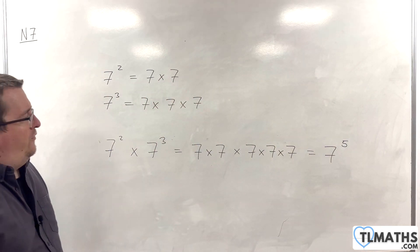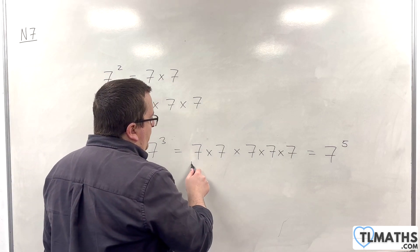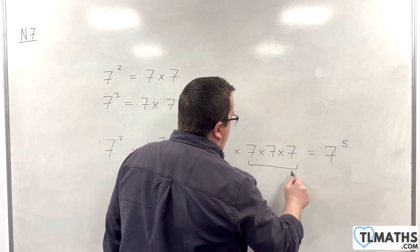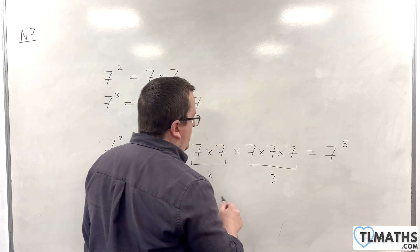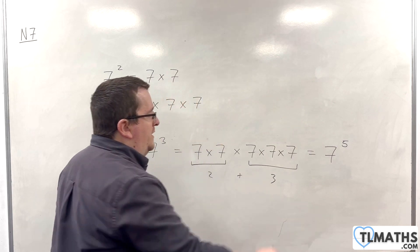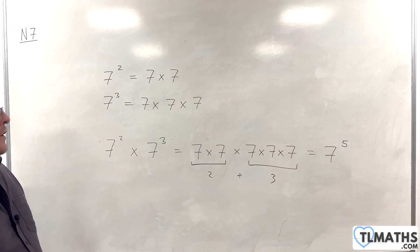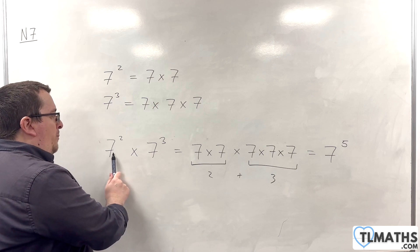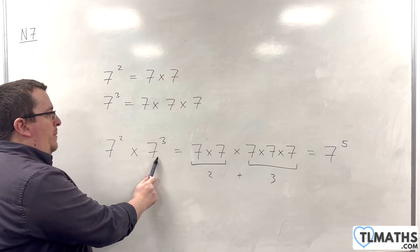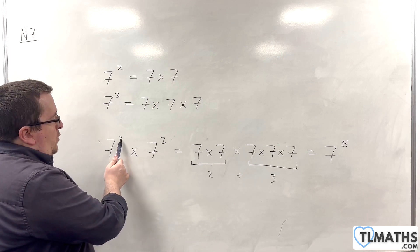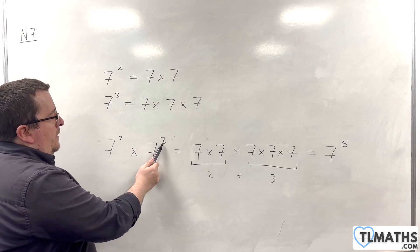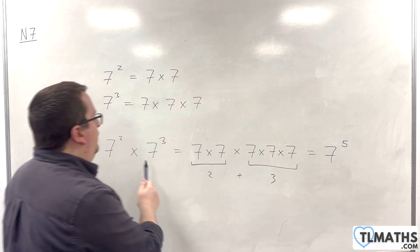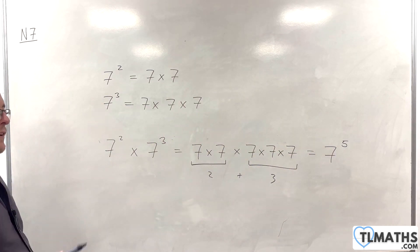And what we've done is we've said we have 2 here and we have 3 here, and we added those together. So essentially, what's happened is that when you're multiplying 7 squared by 7 cubed, it's like you're adding the indices together — 2 plus 3 makes the 5.